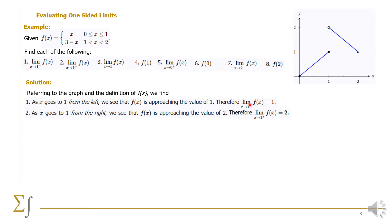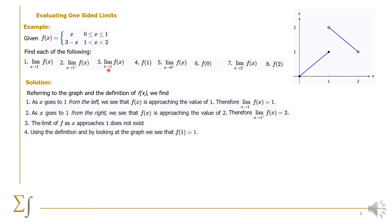We see that the limit from the left and the limit from the right are not equal. So we cannot find the limit for number 3 — the limit of f(x) as x approaches 1 does not exist. For f(1): from the definition, f(x) equals x on the closed interval 0 to 1, so we plug in 1 and the value of the function is equal to 1.